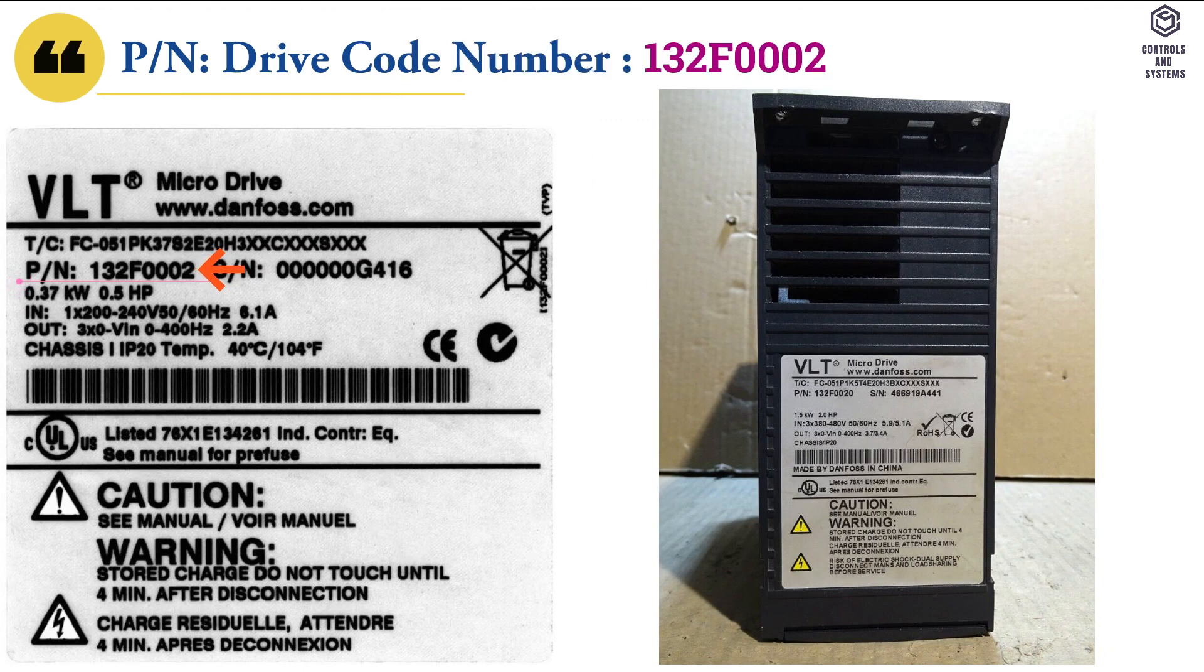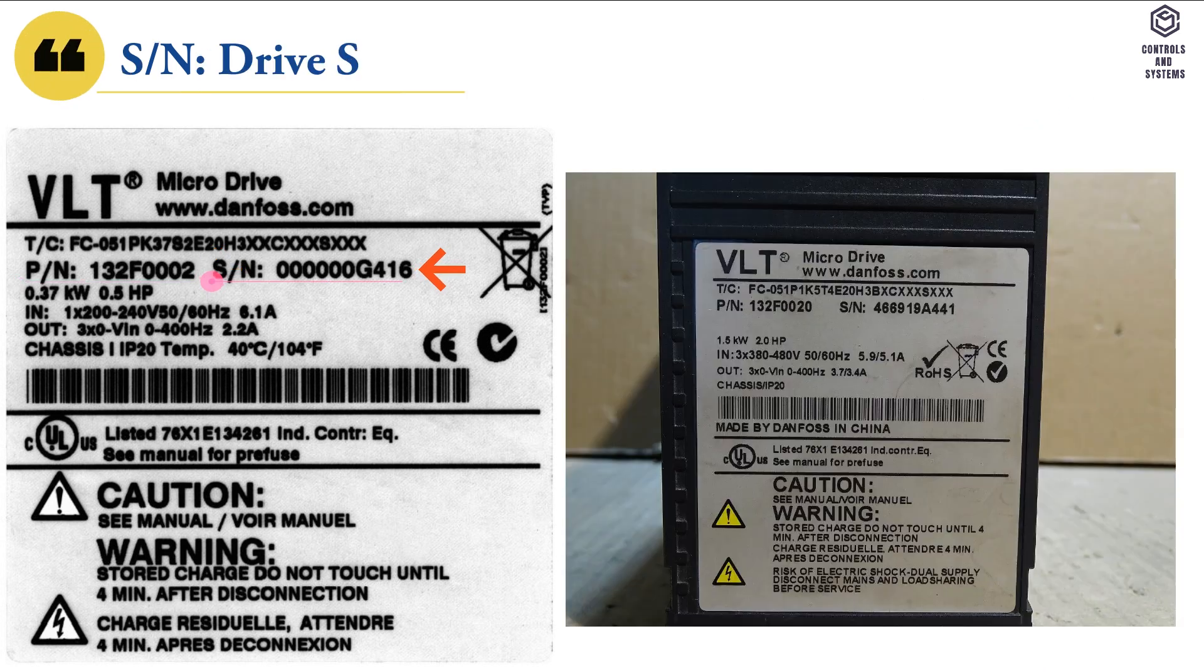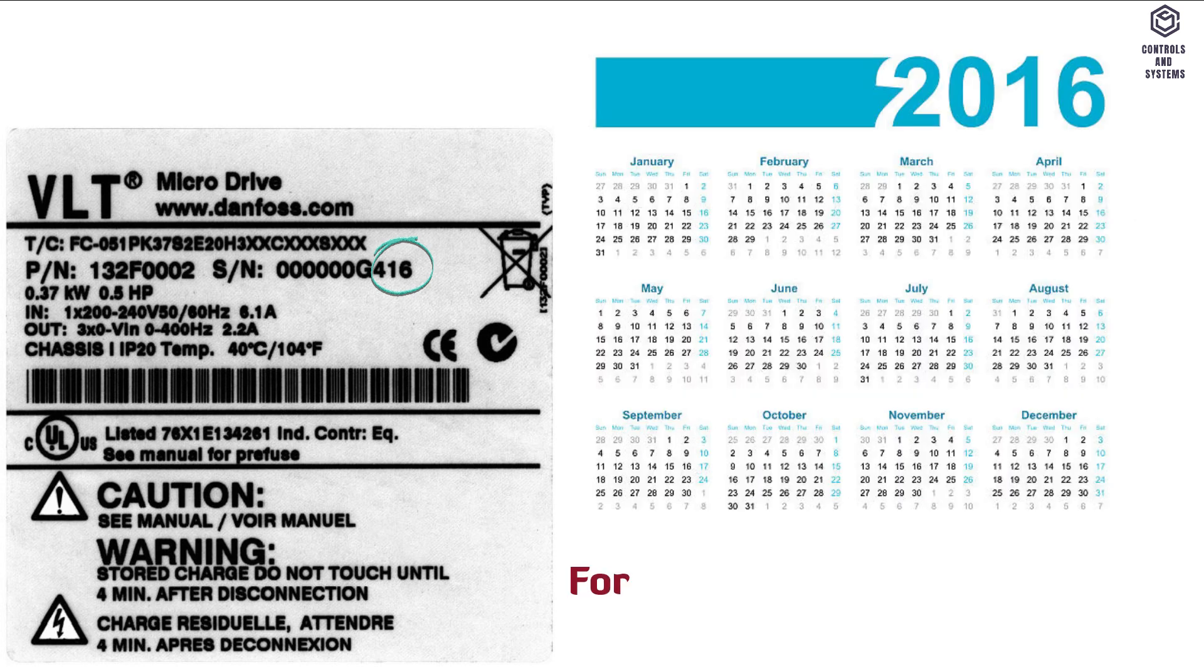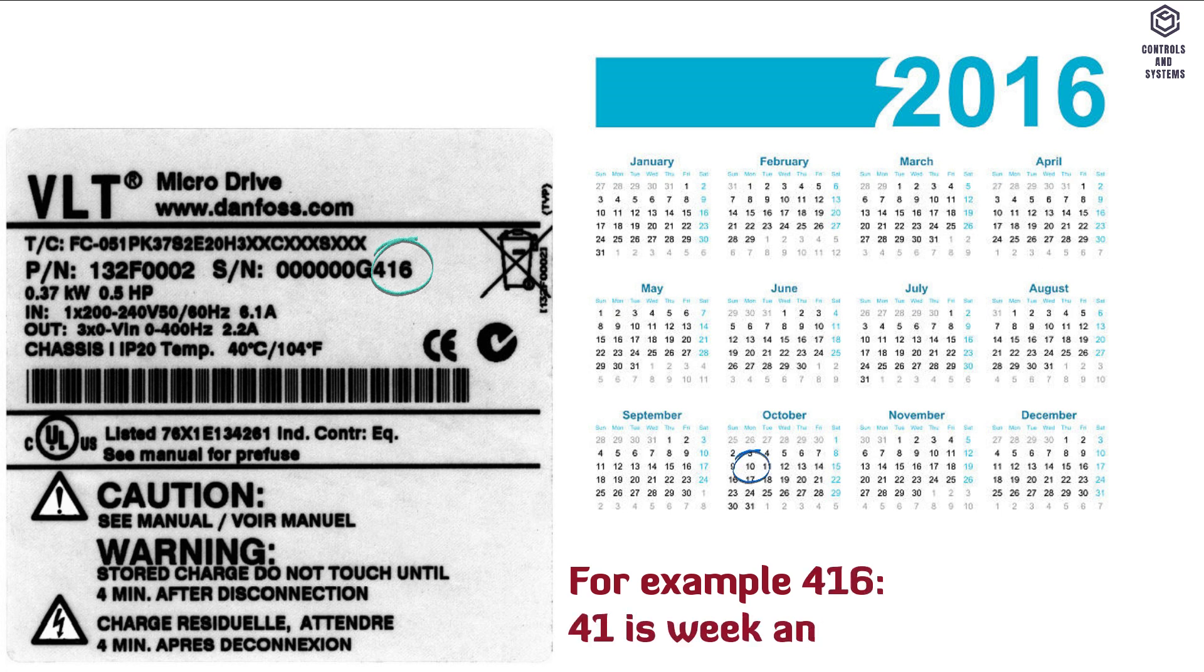Second row PN is the drive code number. Second row SN is the drive serial number. The last three digits indicate the week and year that the unit was built, for example 416, 41 is week and 6 is year that means 2016.